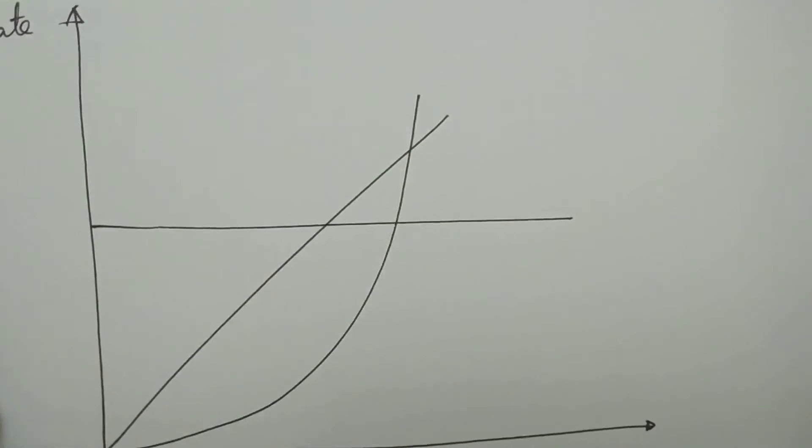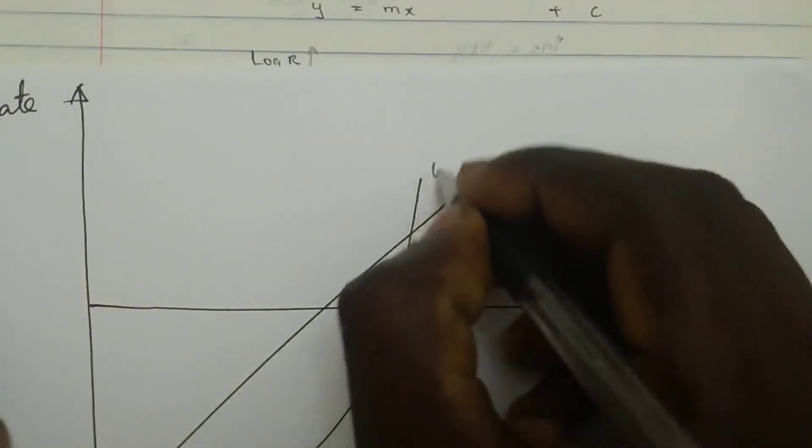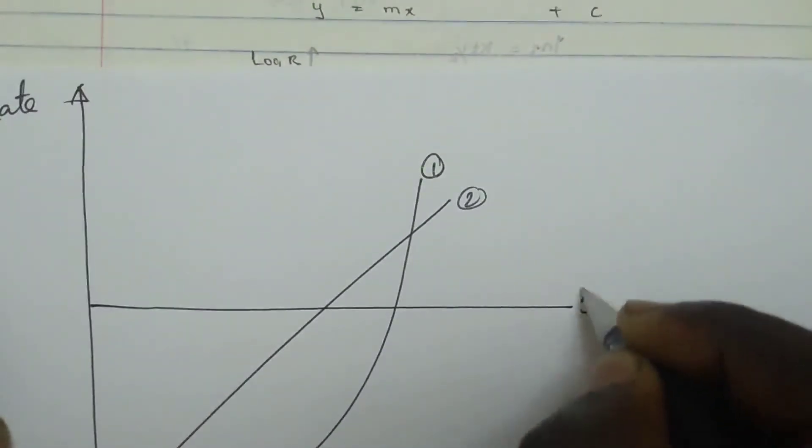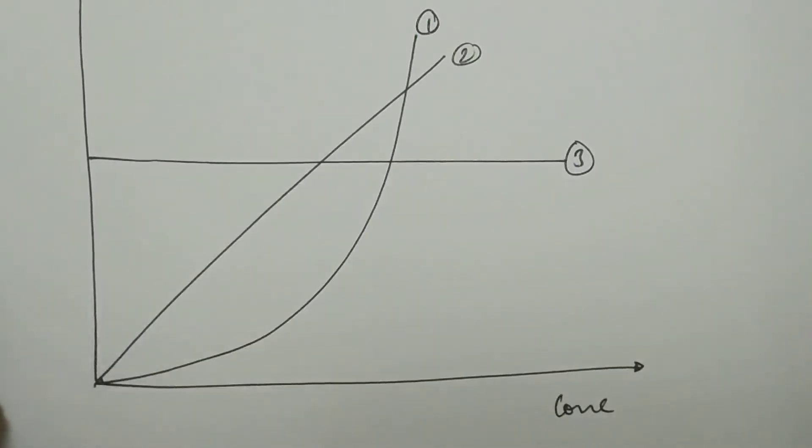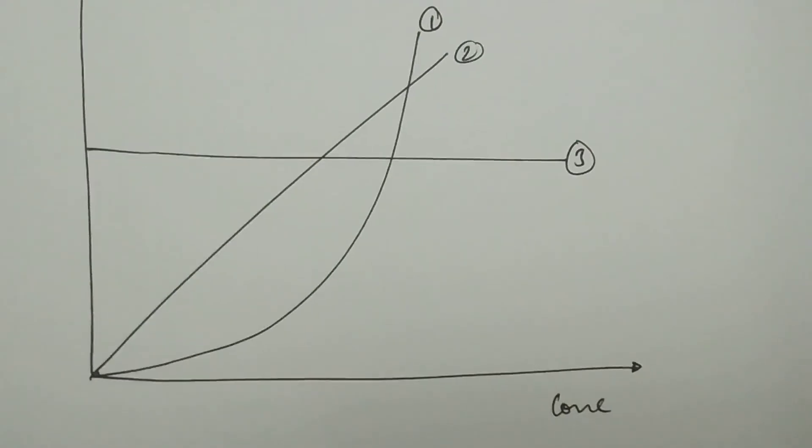Sometimes you can be given a question, even in theory, then you're given graph number one, number two, number three, then you're told to say which is for zero order, which is for first order, and which is for second order. And you can also be told to explain why. You see, so you need to have all of these knowledges so as to become competent in different kinds of environment. And also there are different graphs for half life, all of those, you need to know and understand which is which.